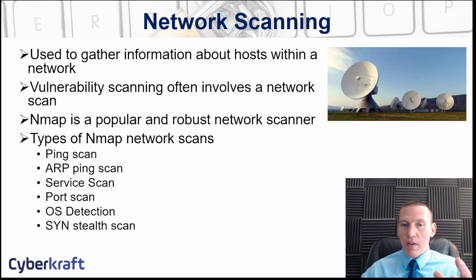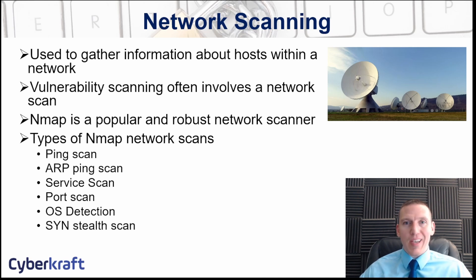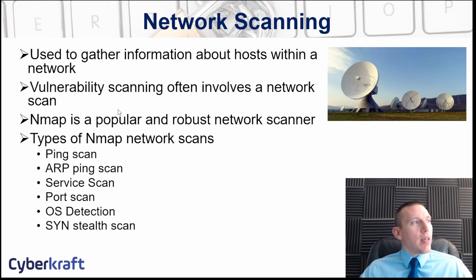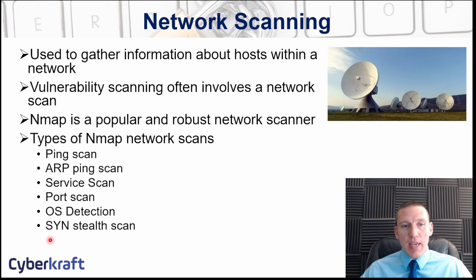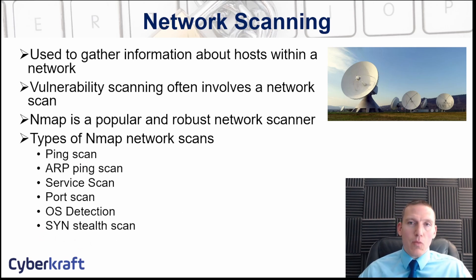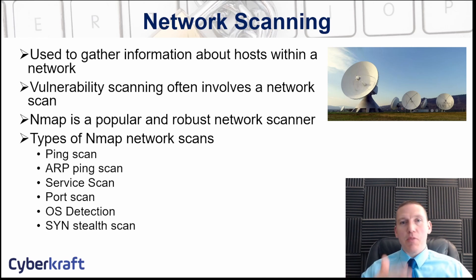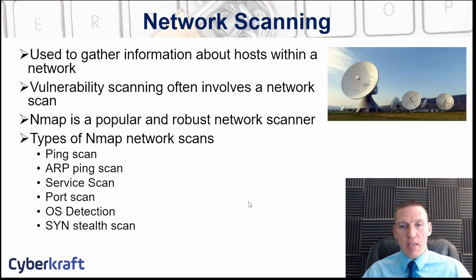One type of vulnerability scan is a network scan, which can be used to identify and enumerate the hosts on our network. A very popular network scanning tool is NMAP, and there are different types of NMAP scans: ping scans, ARP scans, server scans, port scans, and SYN synchronization packet scans. Network scanning is not quite the same as vulnerability scanning — it's a way of enumerating devices on our network. A vulnerability scanner deployed on a network will often also perform a network scan as part of the vulnerability scan, so that can be built in.